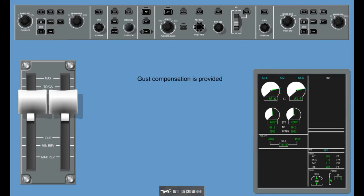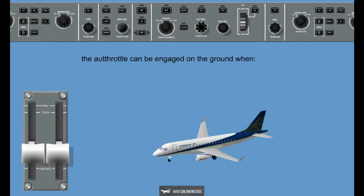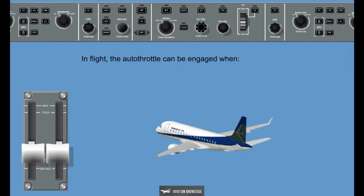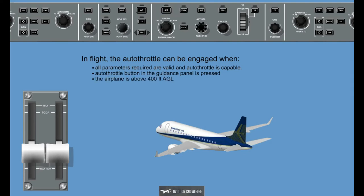Gust compensation is provided to increase the lower speed limit above 1.23 VREF up to 5 knots in gusty conditions. The autothrottle can be engaged on the ground when all parameters required are valid, autothrottle is capable, autothrottle takeoff mode is armed, and both thrust levers are above 50 degrees thrust lever angle. In flight, the autothrottle can be engaged when all parameters required are valid, autothrottle is capable, the autothrottle button in the guidance panel is pressed, and the airplane is above 400 feet above ground level.